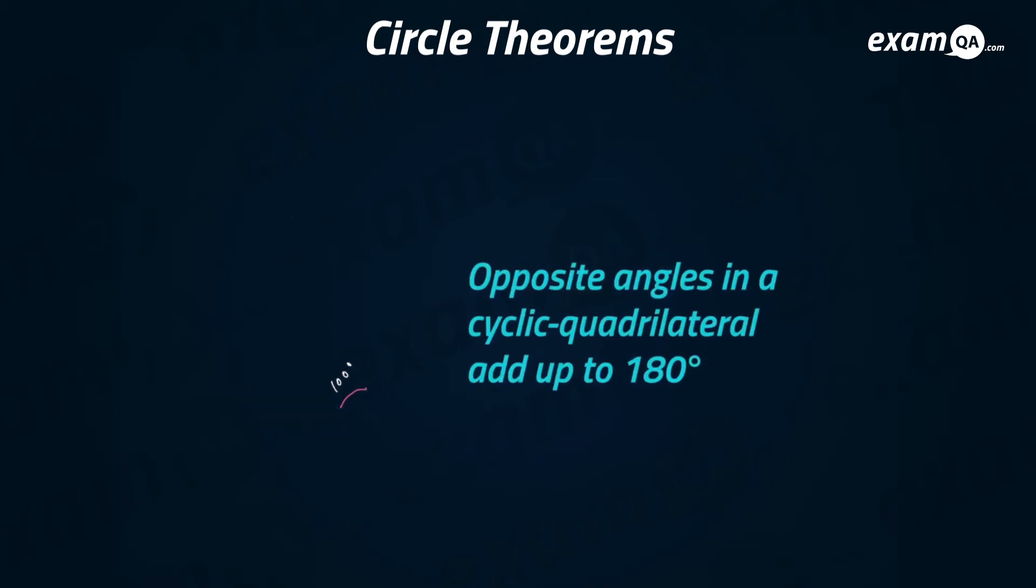A cyclic quadrilateral is basically when you have a quadrilateral inside a circle and it touches four points on the circle.